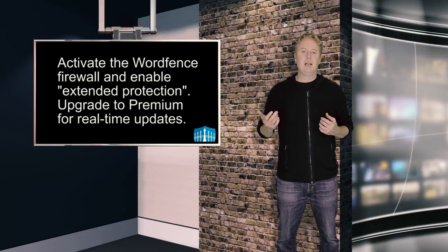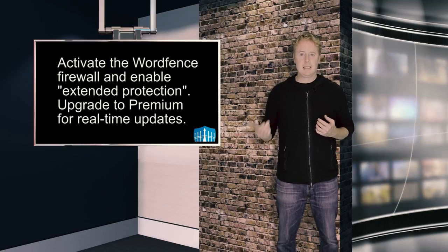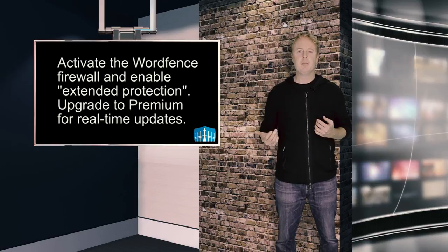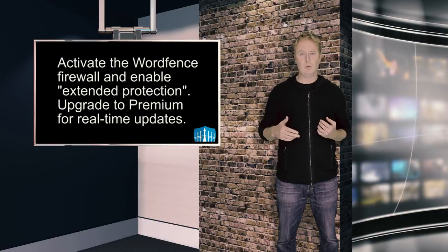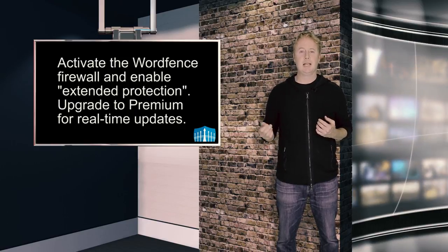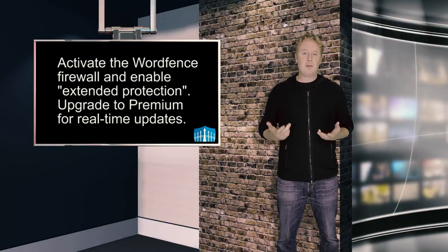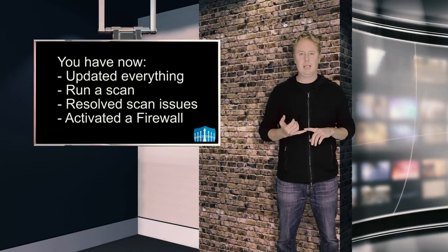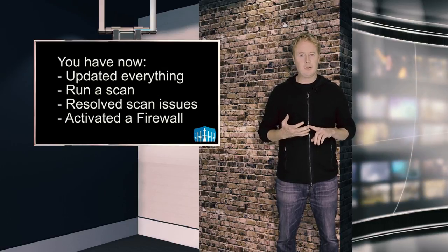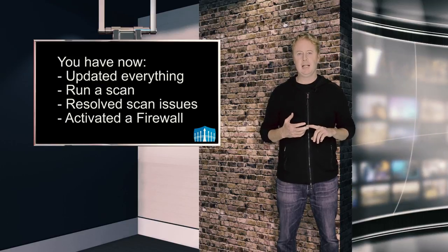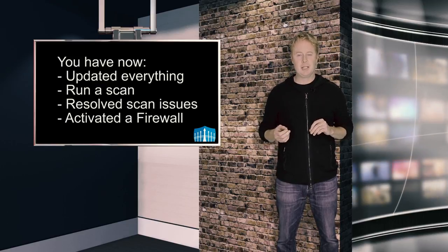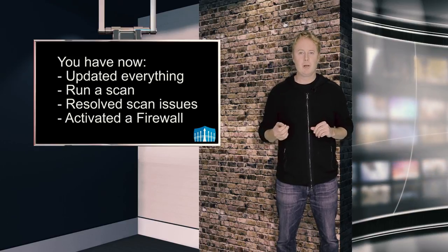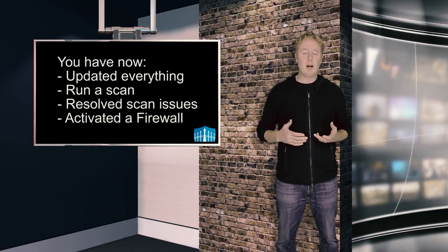Once you're done with that, activate the WordFence firewall — you should activate extended protection. We recommend that you install WordFence Premium because that will give you real-time updates to your firewall rules, so you'll be protected against the latest attacks as they emerge. Once you've installed your firewall, you've now brought everything up to date — updated core, your plugins and themes — installed WordFence, done a scan, and worked through any security issues such as out-of-date software or malicious URLs. You've installed a firewall, and your site is actually pretty darn secure at this point.